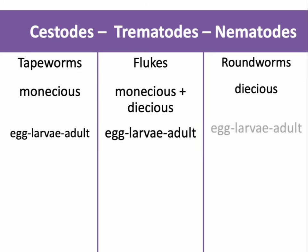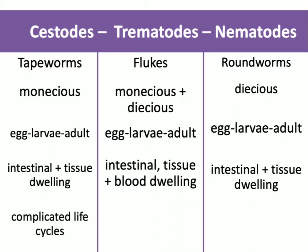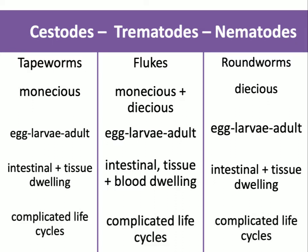They all go through that egg-larva-adult progression, so there might be multiple forms you need to recognize. The cestodes, or tapeworms, were both intestinal and tissue-dwelling. The trematodes were intestinal, tissue, and blood-dwelling. The nematodes are pretty much just intestinal and tissue-dwelling. They all, unfortunately, have very complicated life cycles.